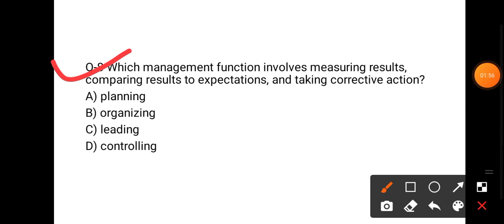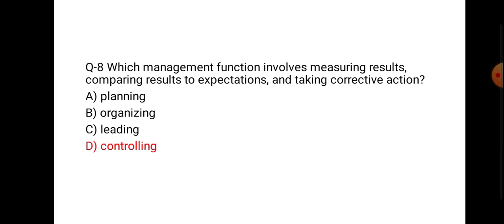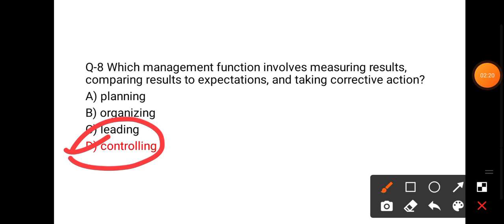The next question is: which management function involves measuring results, comparing results to expectations, and taking corrective actions? Where we measure results, compare, and take corrective actions, which function is happening? Is it planning, organizing, leading, or controlling? Mark your answer in the comment section. The answer is controlling.